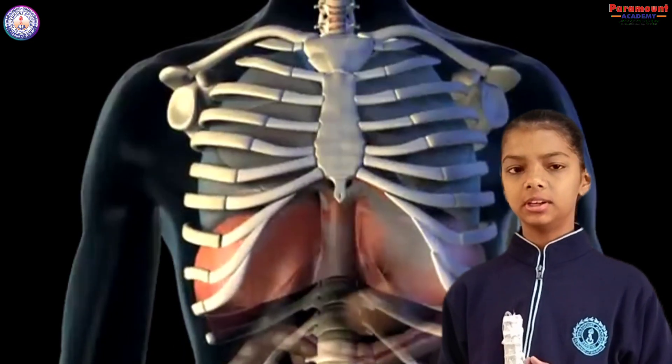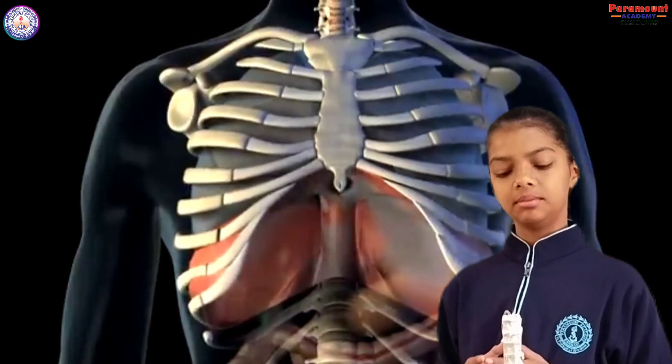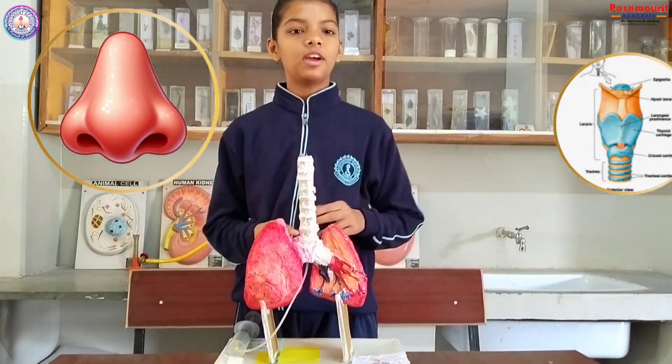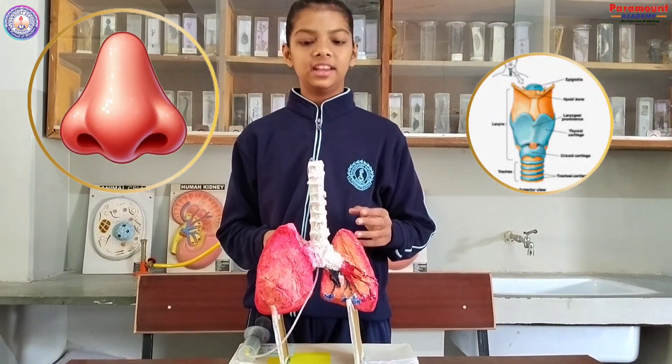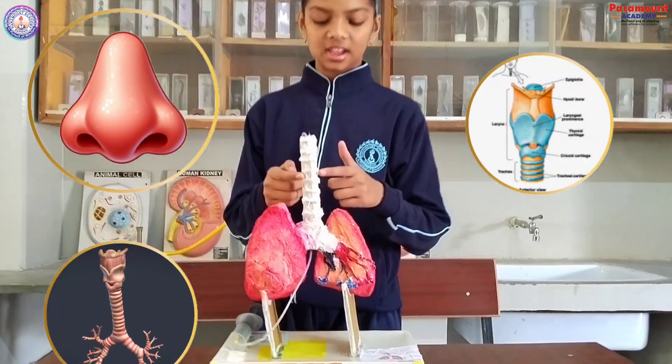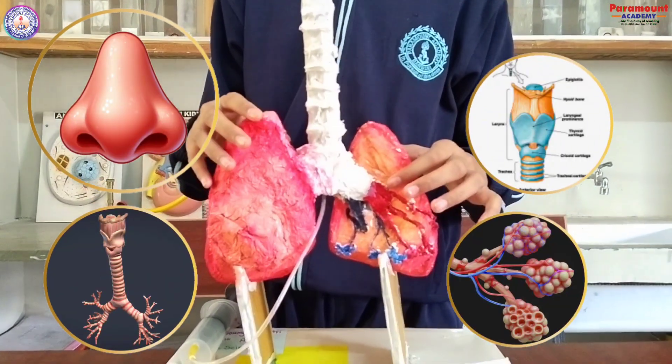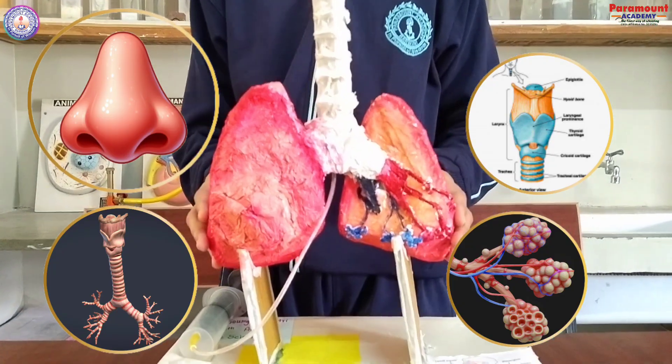The organs of the Human Respiratory System are Nose, Pharynx, Larynx, Trachea, Bronchi, Bronchioles, and Lungs.